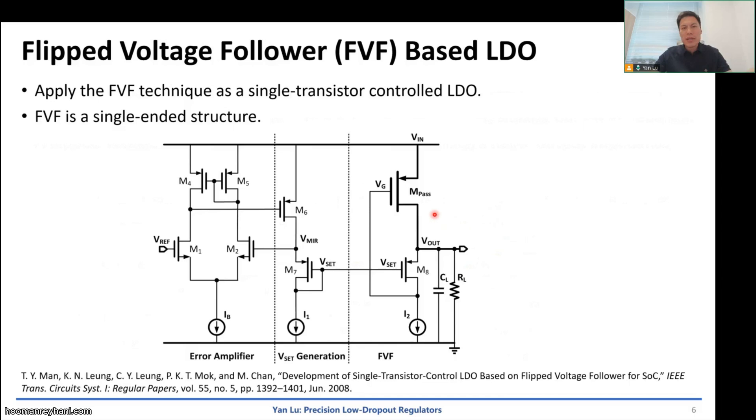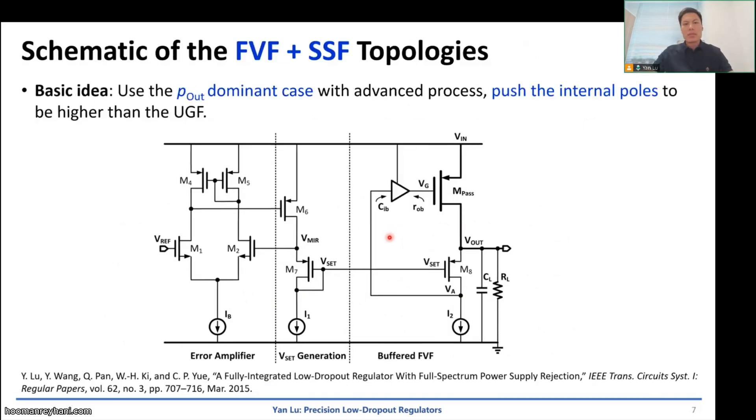So interestingly, actually the flipped voltage follower itself can be an LDO. So here shows a simple example. On the left part of the circuit, we have an error amplifier generate Vsat, which will set the output voltage. So Vout will be Vsat plus Vgs. And on the right, we have the FVF topology, which we call the single transistor-controlled LDO. Output voltage variation will be amplified by M8 and then be used to control the M-pass current. We have a low gain feedback loop. Although the gain is small, it will be simple and it can be easily extended to multiple parallel LDOs, which may be good for distributed applications.